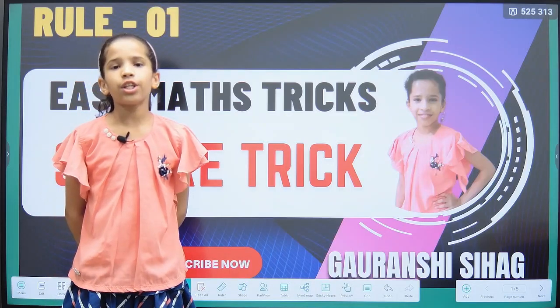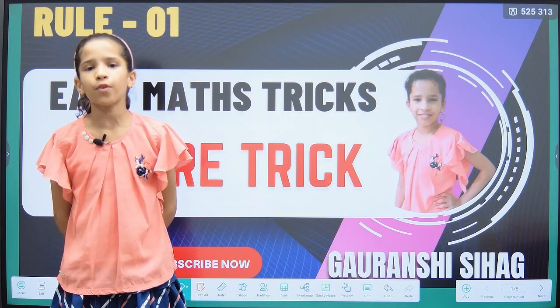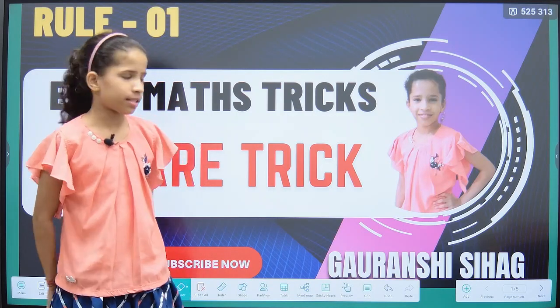Hello everyone, I am Granshi. Today's topic is to find the square of a number having five in the unit digit without multiplying them. So let's start with an example.